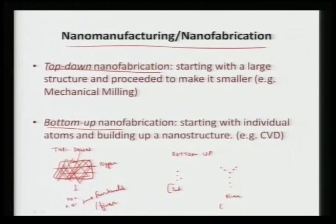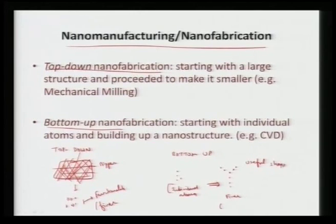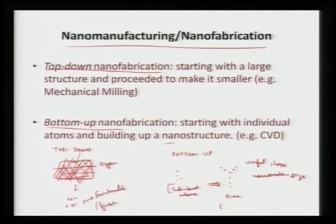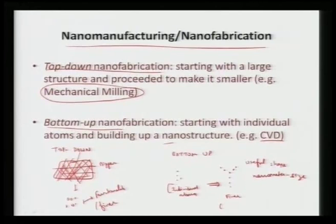In nano manufacturing we have two approaches: top-down approach, where we start with the bigger component and go on to forming a nano material; and bottom-up approach, where we utilize individual atoms or molecules to synthesize something at nano scale. Certain examples of top-down approach can be mechanical milling, while bottom-up approach can be chemical vapor deposition or physical vapor deposition — where we utilize individual atoms to start depositing on a substrate to form a nano coating.